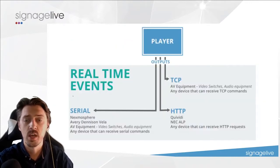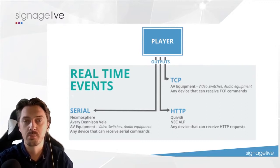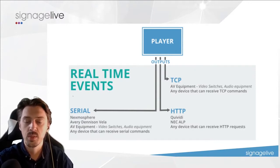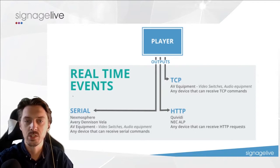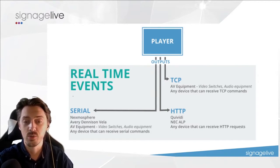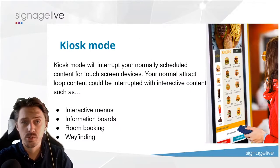Real-time events can output via TCP, HTTP, or serial. Things like AV equipment, video switches, and audio equipment can be triggered based on an asset playing on a player. We've also done work with QVD, NEC ALP, and the ability to display content alterations based on information we have. Serial can similarly trigger Nexmosphere and AV equipment.